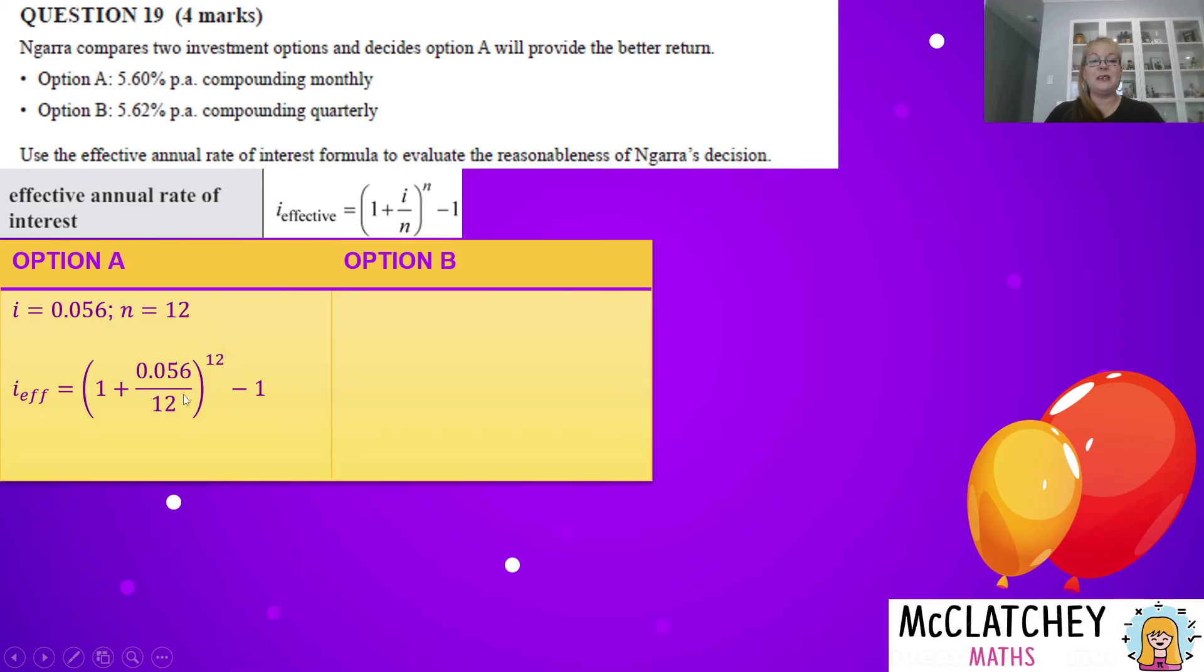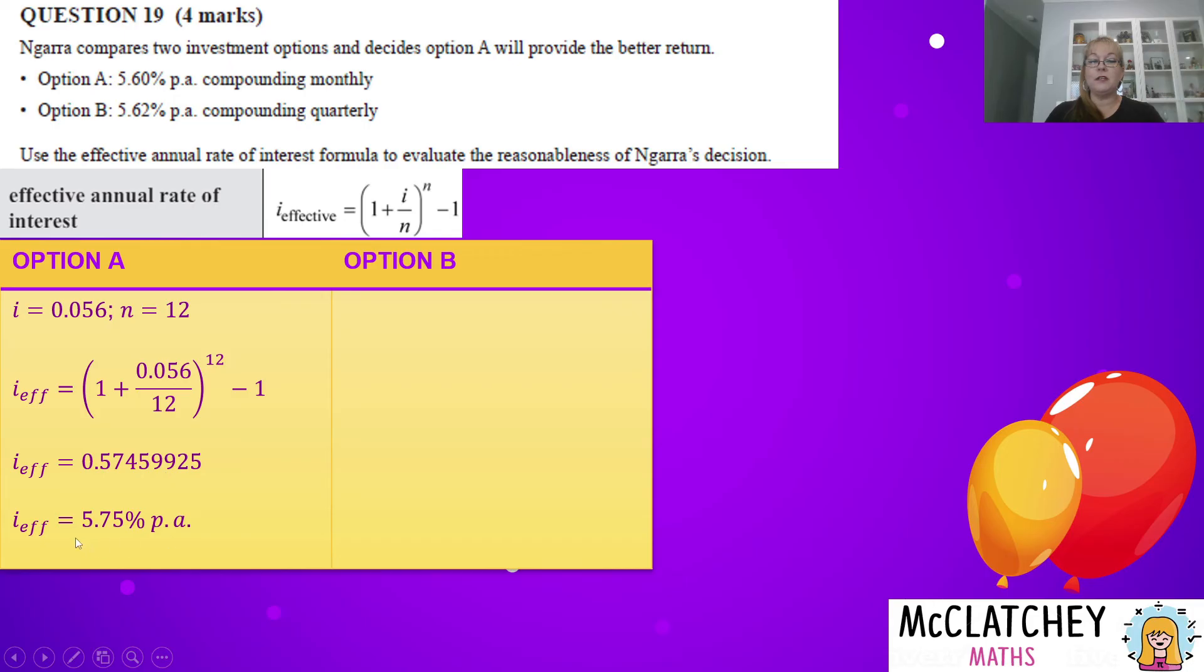Okay, so we're going to substitute that into the formula and then we work that out on the calculator and we get 0.57. Notice that we earned our next mark here for correctly substituting into an appropriate rule. So we substitute correctly into the rule we were told to. We could get that mark for either of these options. So that's wonderful news there. And our effective rate is 0.57 blah blah blah. Now the thing is the interest rates should be given as a percentage. So we now need to times this by 100 to get 5.75 percent per annum. Okay, so that's our next mark there, getting the effective interest rate for option A.